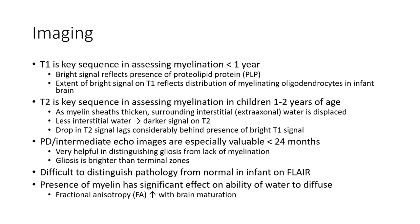T2 is the key sequence in assessing myelination in children 1 to 2 years of age. As myelin sheaths mature, surrounding interstitial water is displaced, resulting in low signal on T2. Dropping T2 signal lags considerably behind the bright T1 signal.